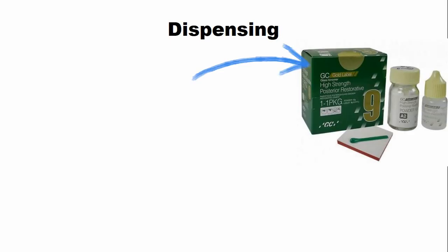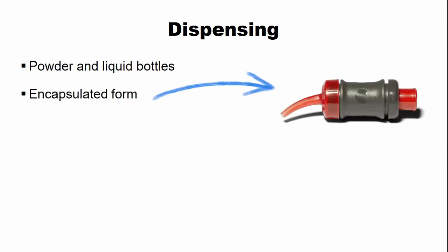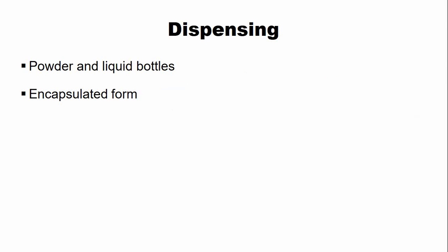Regarding dispensing, glass ionomer cement is available as powder and liquid bottles. Nowadays, glass ionomer cements are also available and used in encapsulated form. The encapsulated forms are easier in mixing because the mixing is clean, quick, and according to a set proportion.